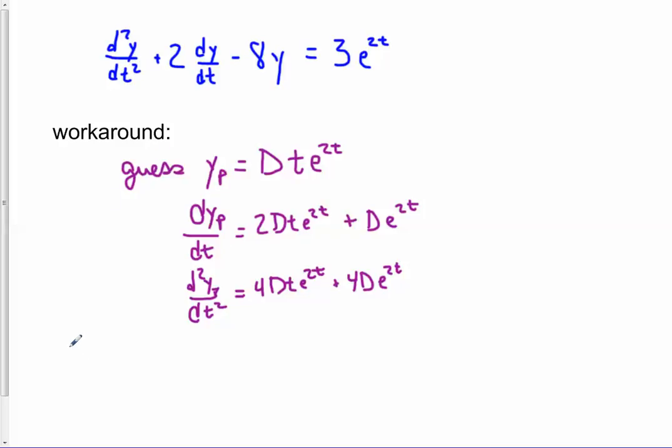So now we plug it in. And we'll have 4d t e to the 2t for the second derivative, plus 4d e to the 2t. That's the whole second derivative. Then plus 2 times the first derivative. So 2 times this. 4d t e to the 2t. And 2d e to the 2t. Minus 8 times the guess itself. And this is supposed to equal 3 e to the 2t.